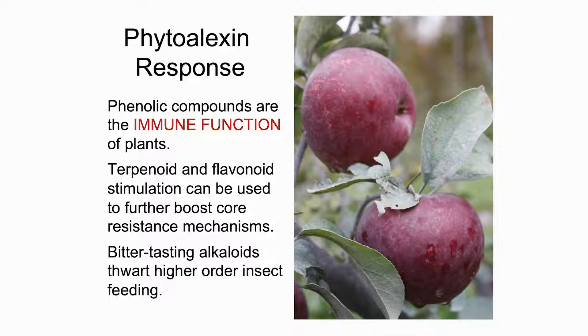Plants go on from there to the fourth leg of healthy plant metabolism: the production of secondary plant metabolites. I like to refer to these as resistance metabolites — the terpenes, flavonoids, and polyphenol compounds that plants use to ward off more complex bacterial diseases as well as higher-order insects like beetles that impact the crop directly. We want this whole process to be robust, because that means our plants are going to be more resilient in the ecosystem we're growing them in.